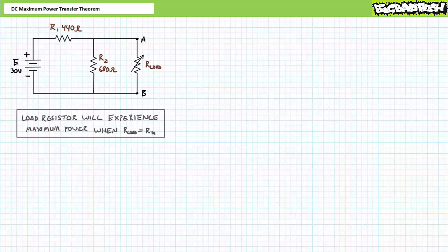Bottom line up front: a variable load resistor will experience maximum power from a circuit when its resistance is equal to that of the Thevenin's equivalent resistance for that circuit. This is to suggest maximum power is delivered to the load when R-load equals R-TH. As we'll soon learn, this isn't exactly the most efficient of conditions, but it does represent peak power delivery conditions to the variable load resistor.